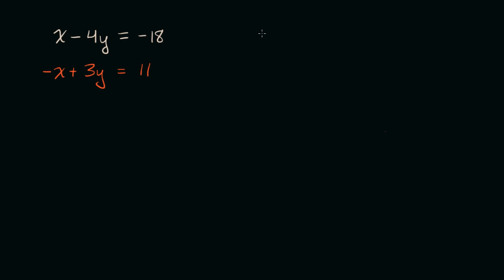I'm just going to rewrite the first equation over here. So x minus 4y is equal to negative 18. Now we've already seen in algebra that as long as we do the same thing to both sides of the equation, we can maintain our equality. So what if we were to add, and our goal here is to eliminate one of the variables so we have one equation with one unknown. What if we were to add this negative x plus 3y to the left-hand side here?